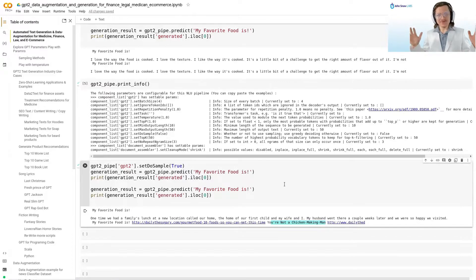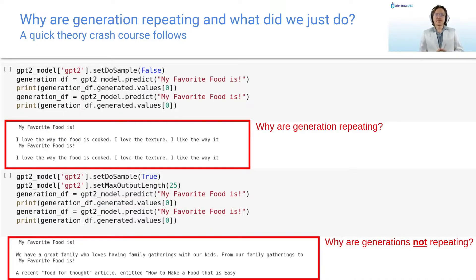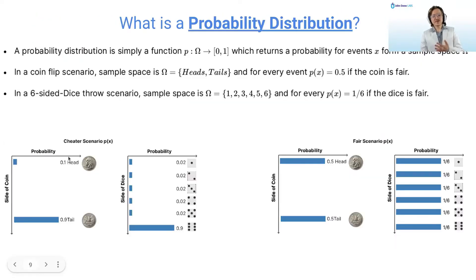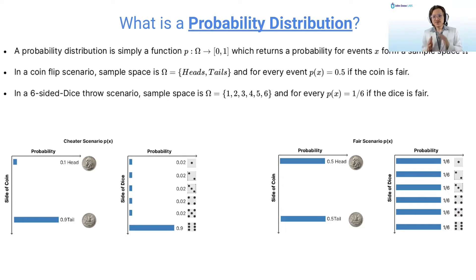What just happened? We noticed that when we set the parameter do_sample to true, the generations became random and non-repetitive. When we didn't set it to true — using the default value of false — the generations were repeating. To understand what is happening, we must first understand what is a language model. But to understand the language model, we must quickly remember what is a probability distribution.